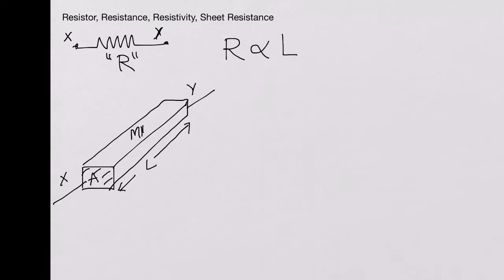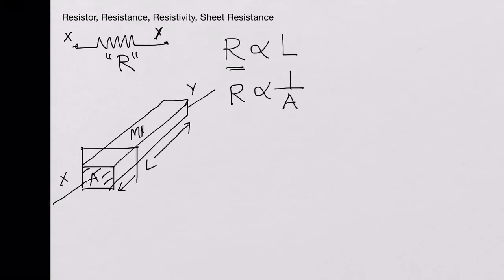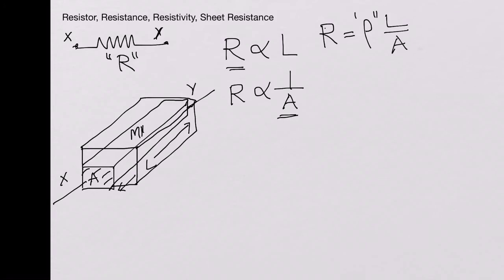As the length increases, the resistance increases. The resistance is also inversely proportional to the cross-sectional area. If we have the same length but a much bigger cross-sectional area, the resistance decreases. R can be written as rho times L over A, where rho is called resistivity.